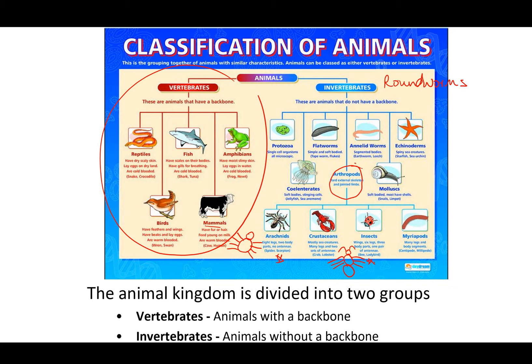Crustaceans are mainly sea creatures but some live on land. They have a chalky outer skeleton, many legs, and two sets of antennae, with a body split into many sections — crabs and lobsters are the main examples. Myriapods — the prefix 'myria' means many, 'pod' means feet — so you can guess these are centipedes and millipedes. They differ from annelids because they have legs, whereas annelids do not.